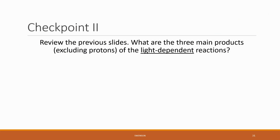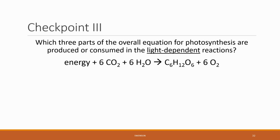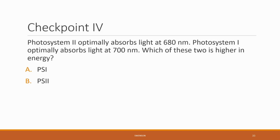Checkpoint two: review the previous slides — what are the three main products, excluding protons, of the light-dependent reactions? Checkpoint three: which three parts of the overall equation for photosynthesis are either produced or consumed in the light-dependent reactions? Checkpoint four: Photosystem II optimally absorbs light at 680 nanometers and Photosystem I at 700 nanometers — which of these two is higher in energy?